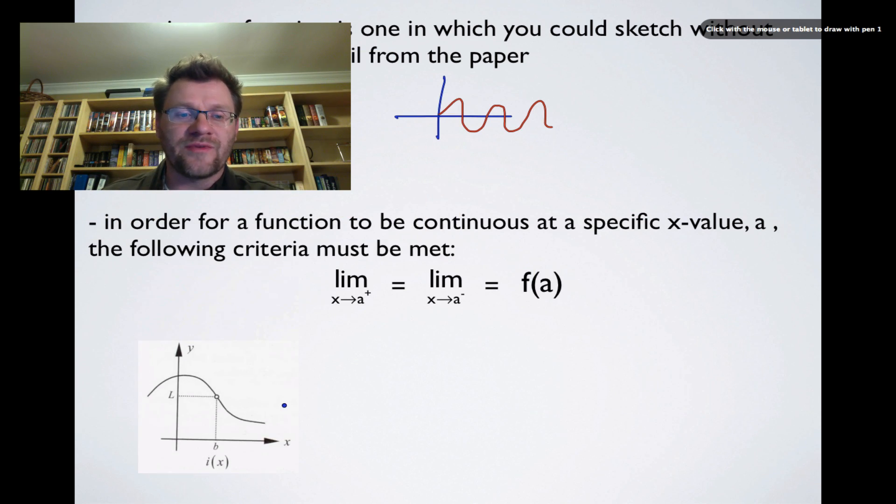So let's just take a look at a couple examples here. Our first example, you can see that the limit as x approaches, in this case it looks like it's the letter b, as x approaches b from the left hand side, and the limit as x approaches b from the right hand side, they both reach the same number, but that function doesn't actually exist in that place. So that means, in this case, the first two conditions have been met, but the third condition is not met. f of a, or in this case f of b, does not actually exist.